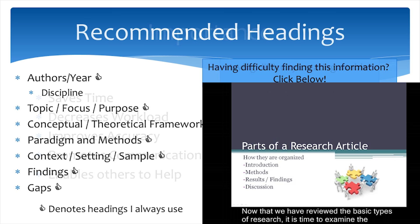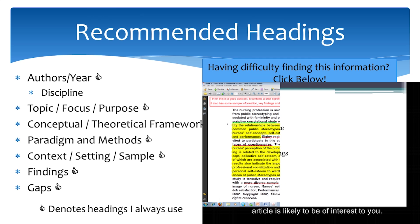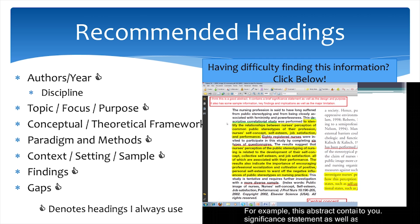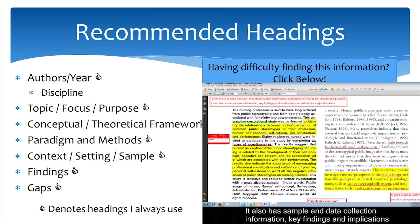To set up your table, first identify the number of columns you think you will need. I usually start with 7. You can add more later if you need to, but I find it easier to remove information before publication than to add it. The headings in your table will depend on the information you need to collect, which will depend on the purpose of your review. In this video, I will go over the ones I recommend using, as well as a few other helpful options.